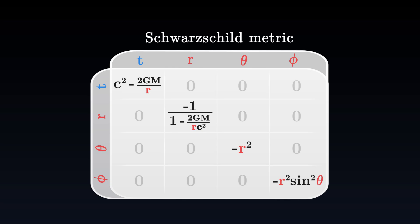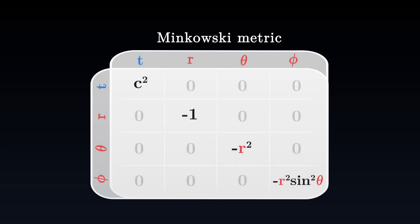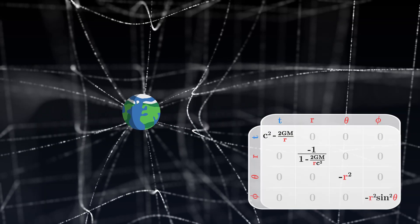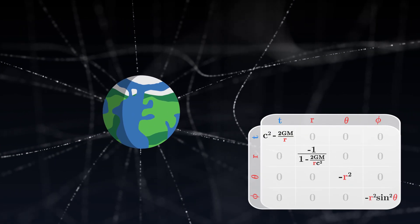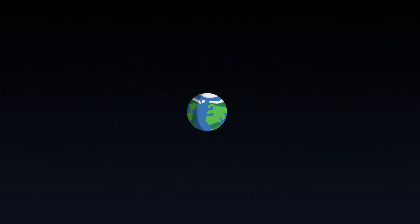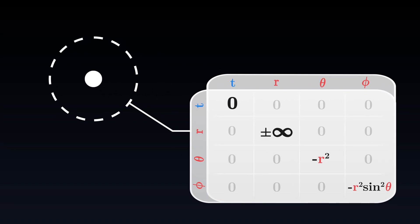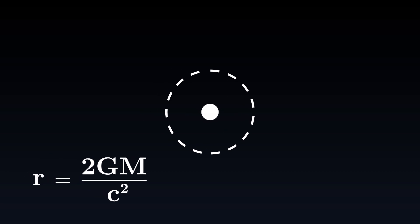The Schwarzschild metric depends on the mass of the object. If the mass is equal to zero, we recover the Minkowski metric, describing an empty space-time. But around a body like the Earth, the Schwarzschild metric indicates that space-time is curved, and the closer we get to the planet, the greater the curvature becomes. In the case of a planet, its surface prevents us from going too close to the center, and inside the planet the Schwarzschild metric is no longer valid. But in the case of a sufficiently compact object whose surface is very close to its center, we would be able to get close enough to reach a distance at which the temporal term of the metric is zero. We have reached a point of no return — time is infinitely stretched compared to the outside. This is the Schwarzschild radius, the horizon of a black hole.